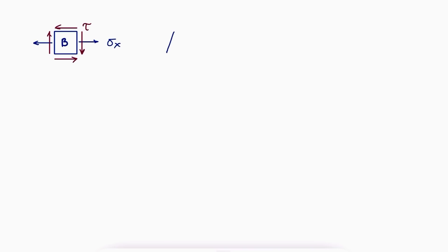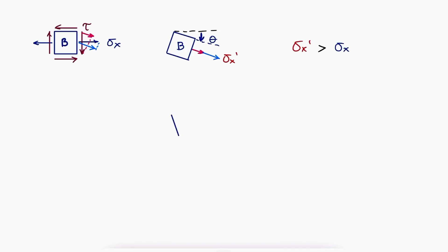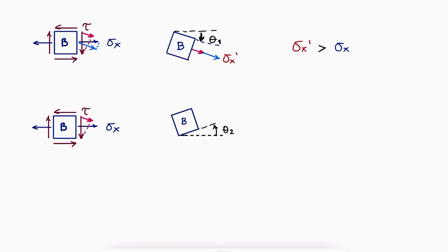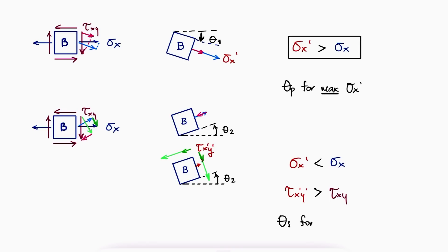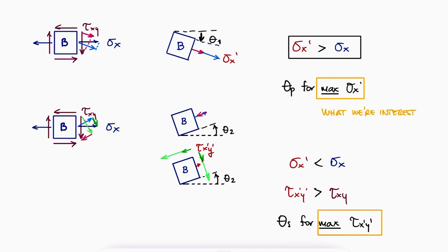For example, if we look at a rotated stress element at location b by a certain angle theta, the resulting normal stress — calculated by adding all the components of τxy and σx in the direction perpendicular to that face — is higher than the original normal stress σx. And for another value of theta, even though the resulting normal stress σx prime is lower than the original σx, τx prime y prime, the resulting shearing stress for that second angle of rotation, would be larger than the original τxy. The two angles theta for which we find the maximum σx prime and the maximum τx prime y prime are important for some applications, but we mostly care about the maximum shearing and normal stresses.